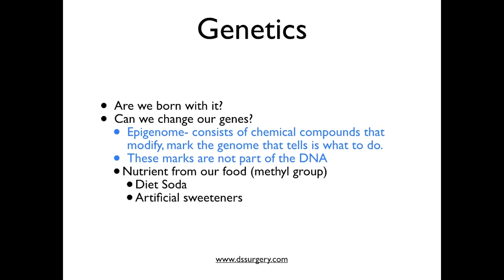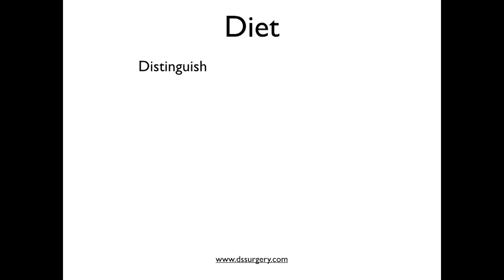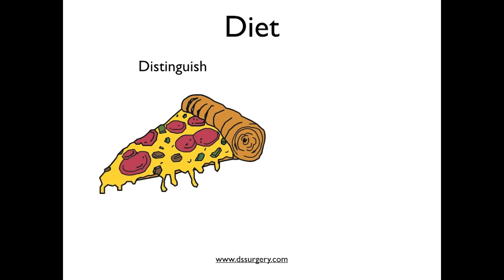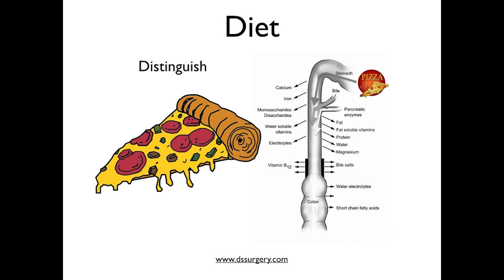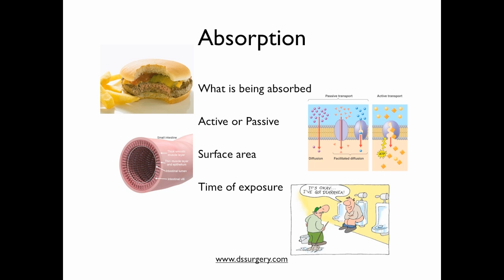When it comes to diet as a cause of obesity, we need to clearly distinguish between what we eat and what we absorb. A lot of emphasis has been given to what we eat — eating smaller volumes or eating healthy — but absorption is what our body does with the food we eat. Absorption is a factor of: what is being absorbed, whether the process is active or passive, how much surface area is used, and the time it takes for absorption to occur. Any variation in those four factors will result in changes in absorption, and consequently the nutritional content and calories we take in.